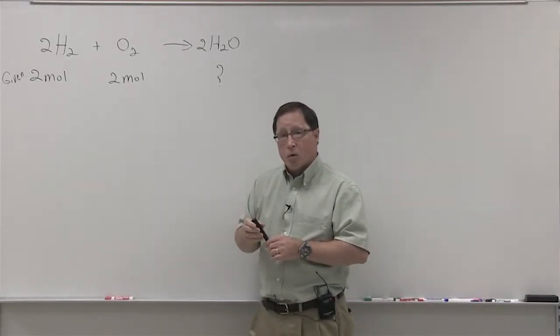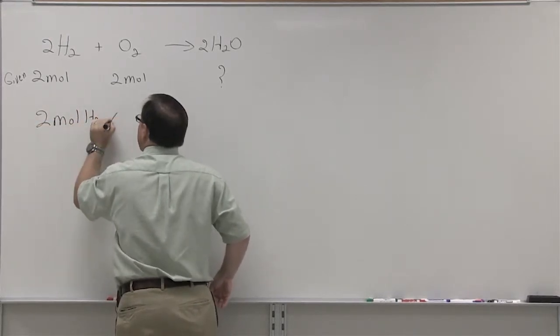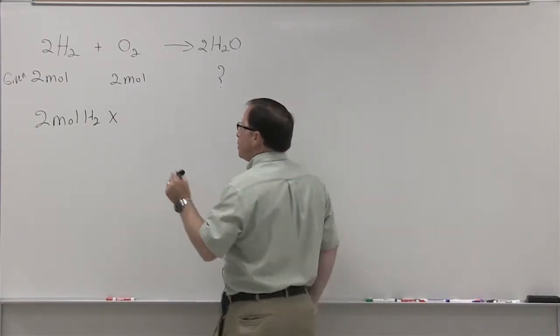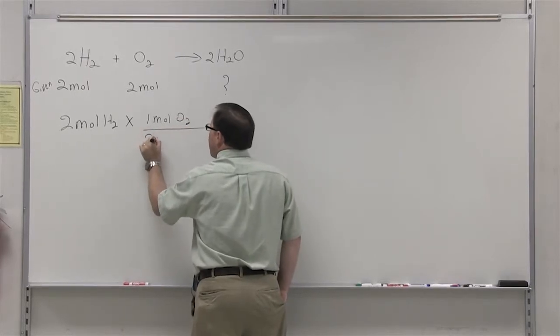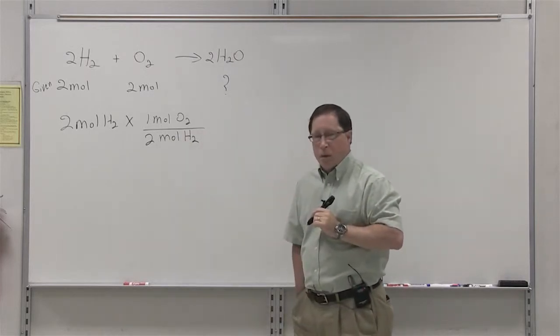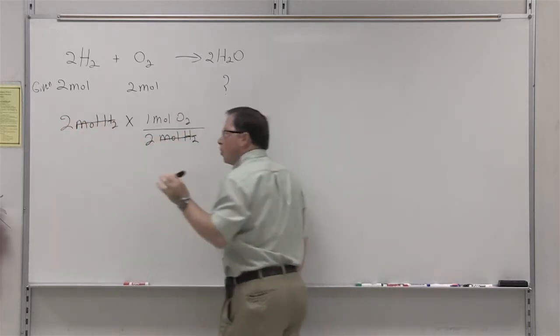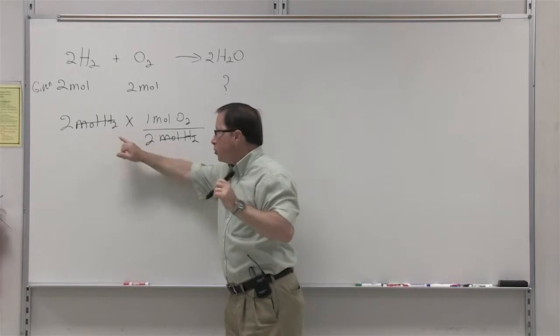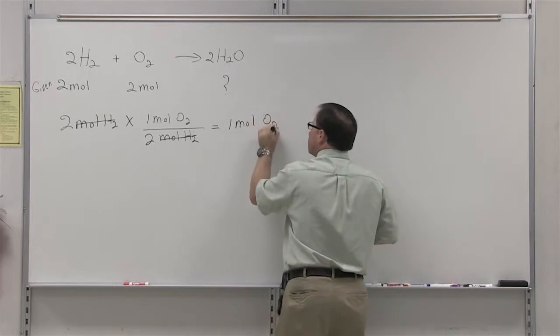The first way is to take the quantity of hydrogen, two moles of hydrogen, and we're going to multiply that by the ratio of oxygen to hydrogen. And there is one mole of oxygen for every two moles of hydrogen. Remember that when you have a fraction of this type the hydrogens will cancel, you're left with oxygen. And what this tells us is that if you have two moles of hydrogen, you need one mole of oxygen to react with it.